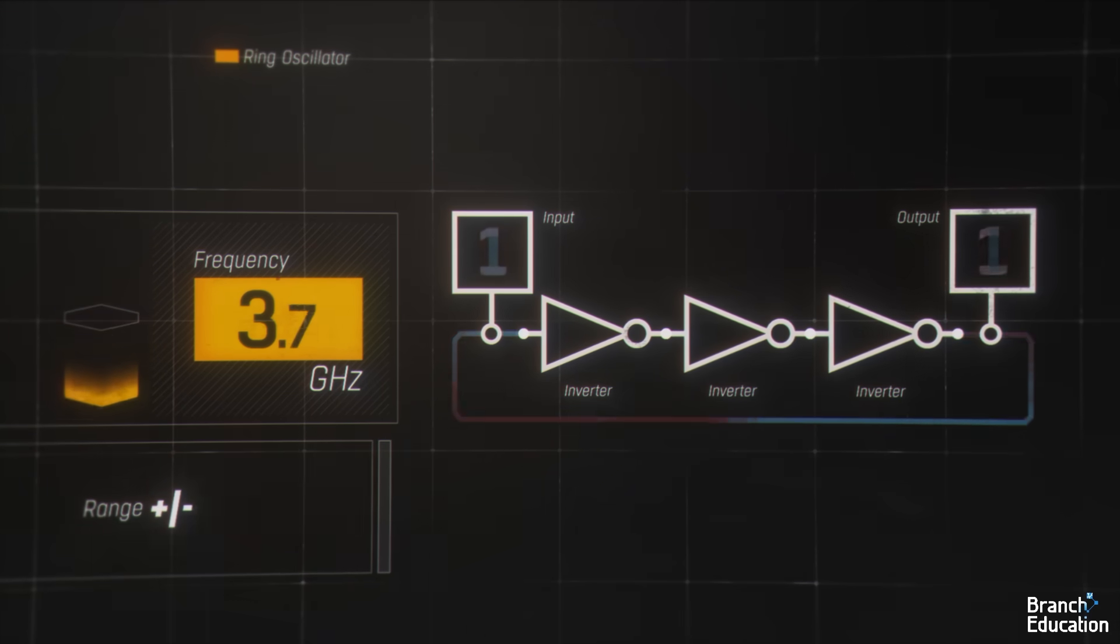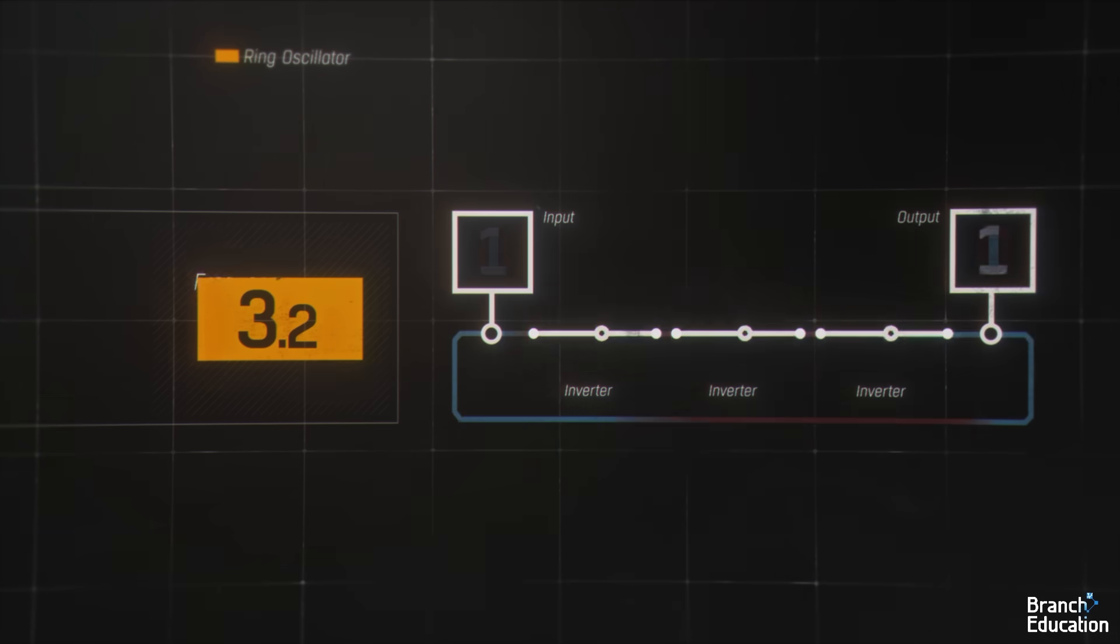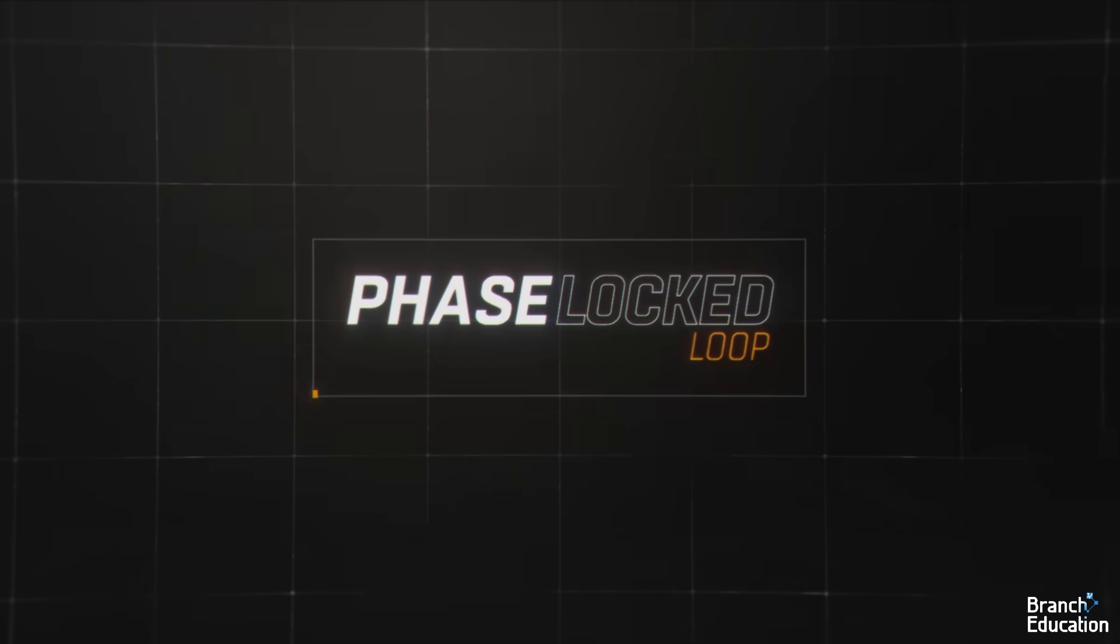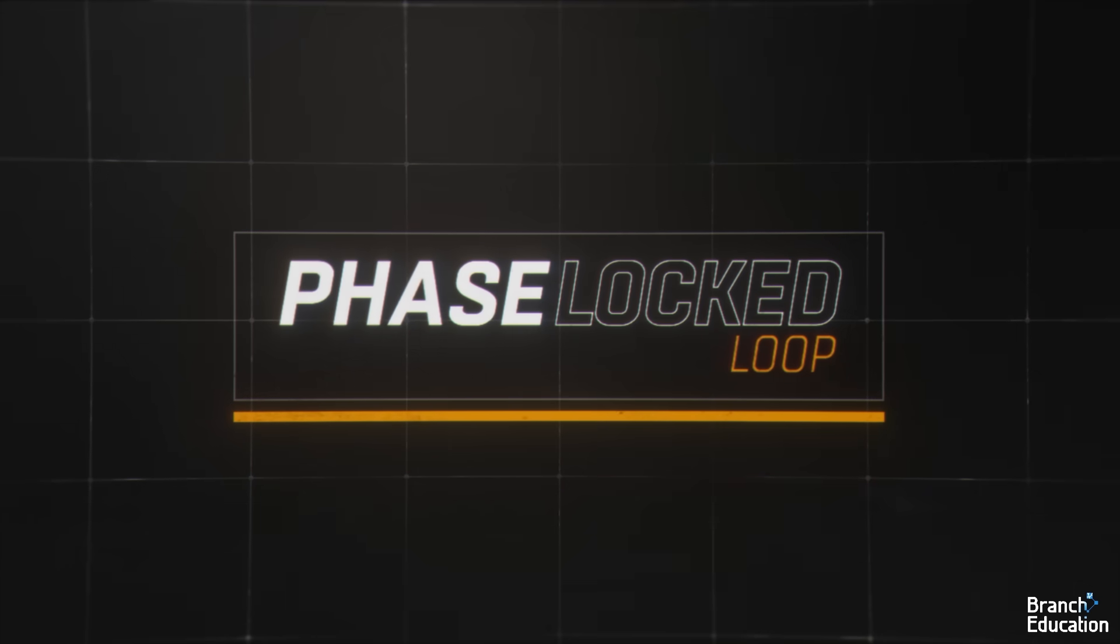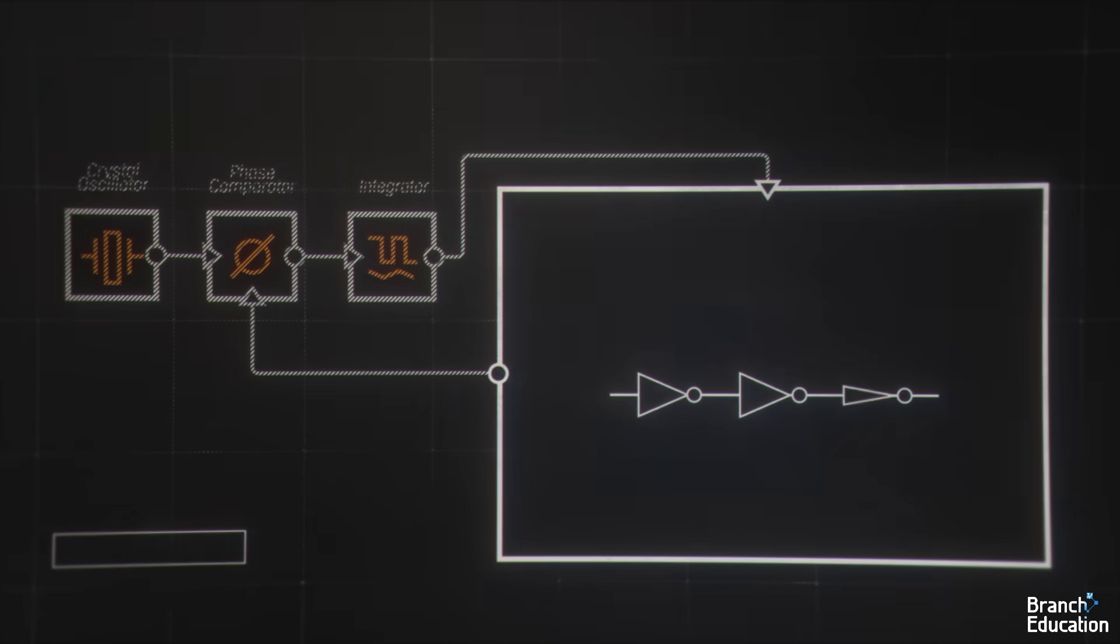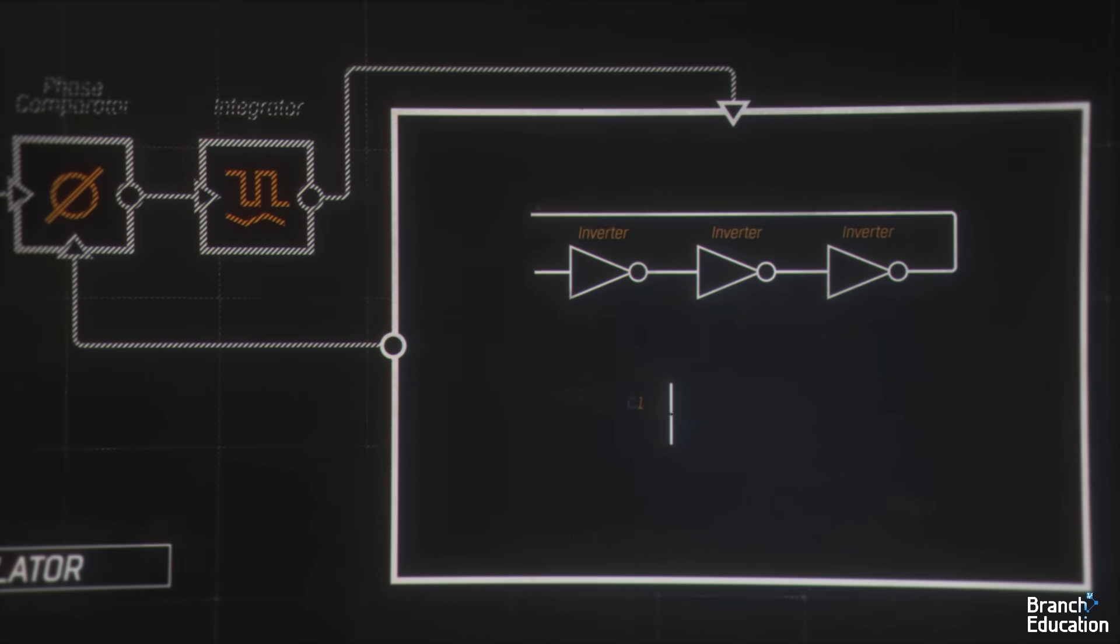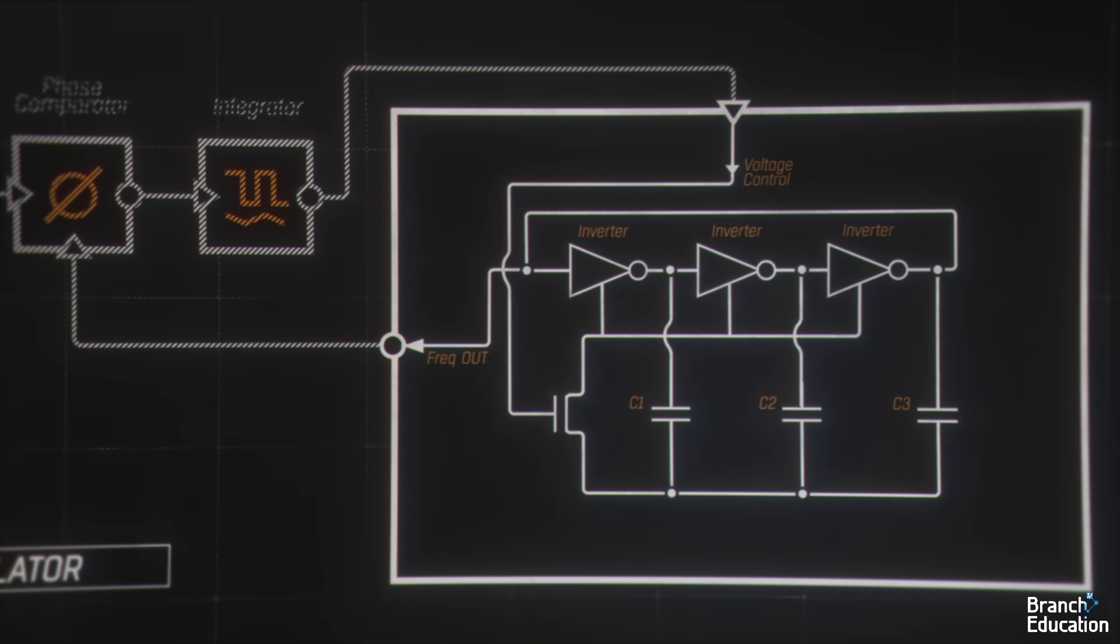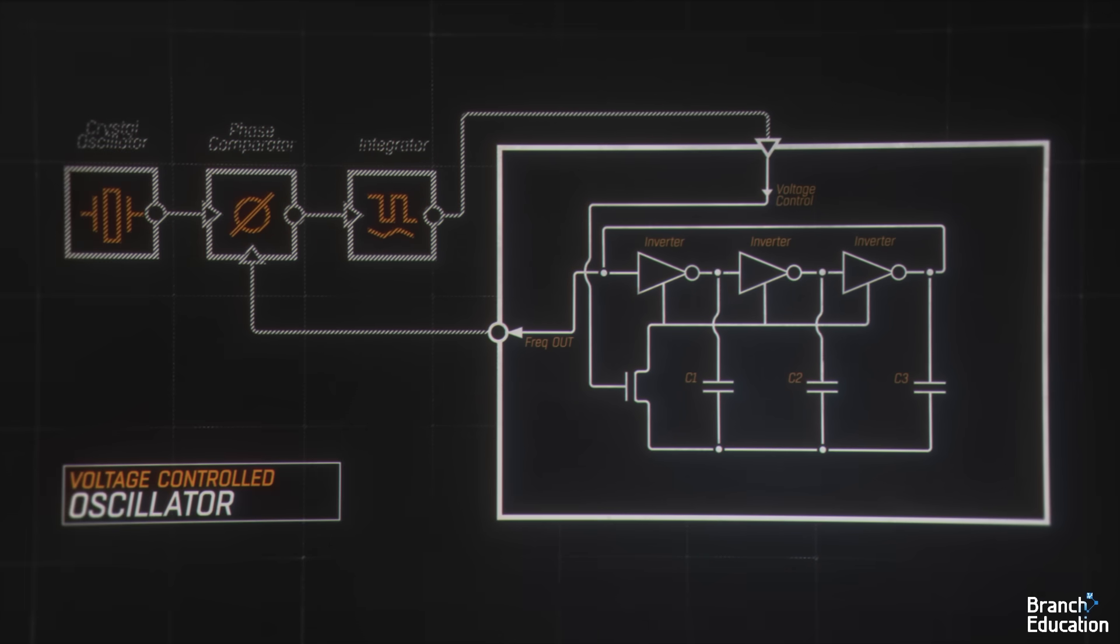Therefore, to stabilize the output frequency of a ring oscillator to less than a few parts per million accuracy, we use a circuit called a phase locked loop. This is a complicated circuit, but here's the general idea of how it works. On the right, we have the ring oscillator, and when we add some additional circuitry depending on the input voltage, the output frequency changes and the ring oscillator is now called a voltage controlled oscillator or VCO.